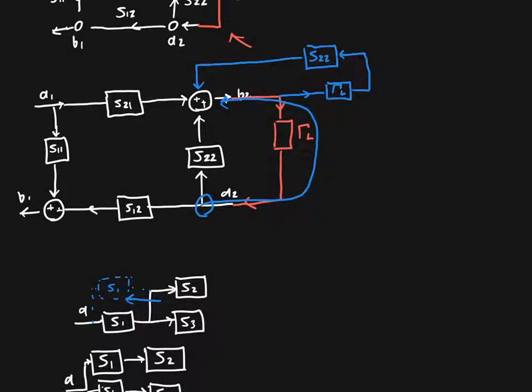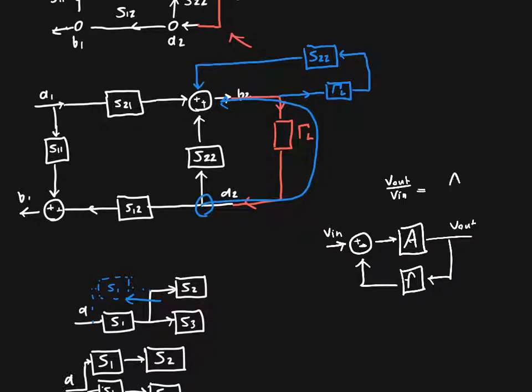So recall from linear systems analysis, if you've got some input, say Vin, some forward path gain A, and some feedback path F, that we can calculate the output over the input just as A over 1 plus AF.